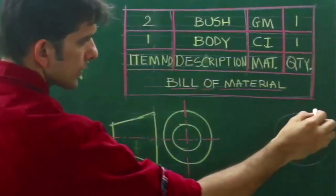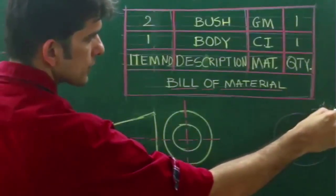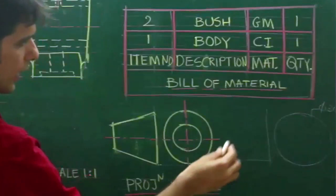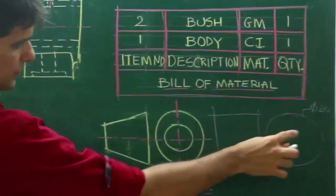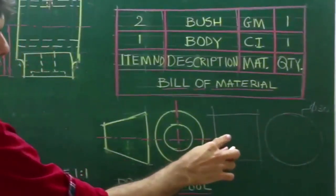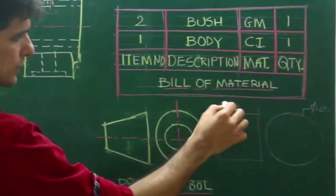First we draw diameter 30, you can take any dimension, I am just taking diameter 30 and I am drawing square of 30, so this is side view, this is front view, then after that so this is also 30.